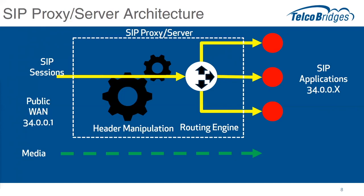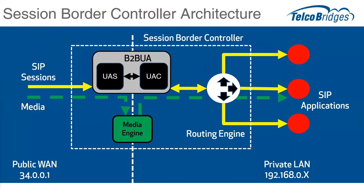A SIP session border controller has a somewhat similar but different architecture. It includes a back-to-back user agent, often shortened to B2B UA. SIP sessions come in and are terminated using a user agent server, logic is applied for any necessary modifications, and then a user agent client initiates a fresh new session. The media comes into the session border controller, goes through the media engine, and then out to the applications. This means media goes through the SBC, giving complete isolation of IP addresses between networks and providing total topology hiding.